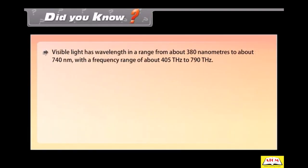Did you know? Visible light has wavelength in a range from about 380 nanometers to about 740 nanometers with a frequency range of about 405 terahertz to 790 terahertz.